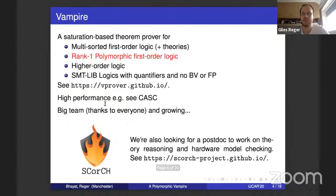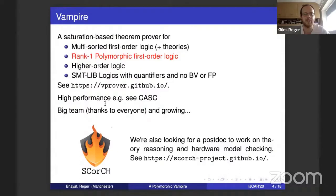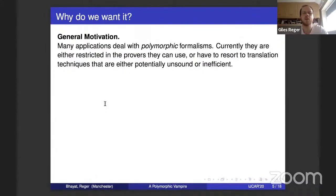What is Vampire? It's a saturation-based theorem prover — you just heard about it in the CASC results. We support a variety of inputs, and now we support rank-one polymorphic first-order logic. If you're interested in finding out more about Vampire, there's information on that slide.